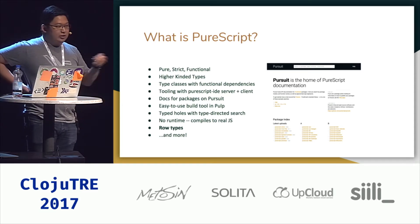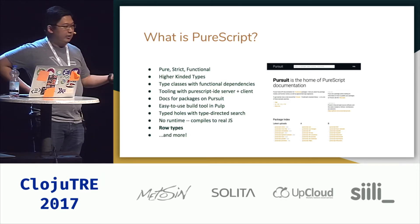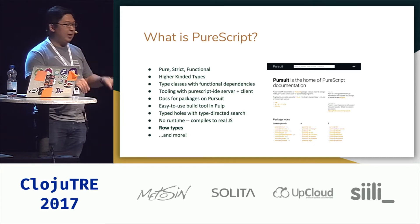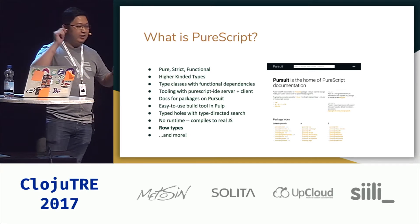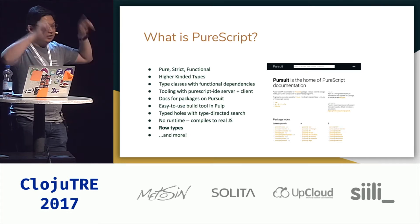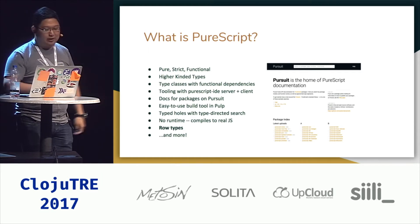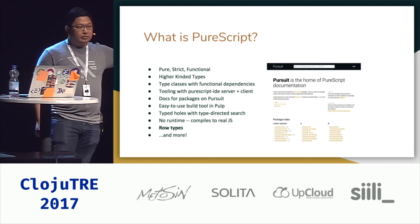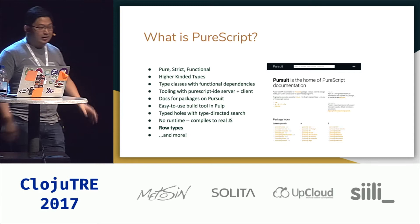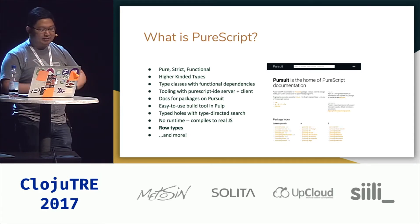The pulp tool lets you get started with projects just by running pulp init. Something really unique to PureScript is that we have type holes with type-directed search. If you put in a type hole and say you don't know what goes there, the compiler will search through your dependencies for a matching type signature and tell you what matches were found. And there's no runtime, so all the compiled JavaScript you can basically copy-paste, and there's no magic step about specific runtime representations.